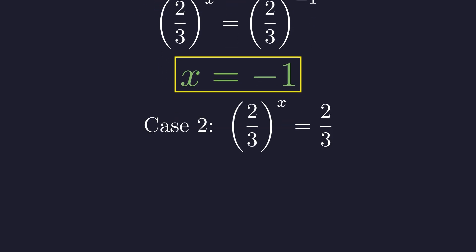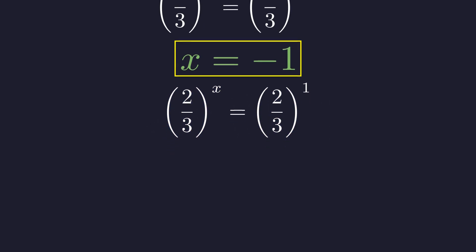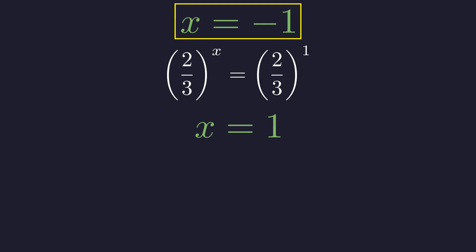Our second case is even simpler. (2/3)^x = 2/3. This is straightforward. We can write 2/3 as (2/3)^1, making that exponent explicit. We immediately see that our second solution is x = 1.